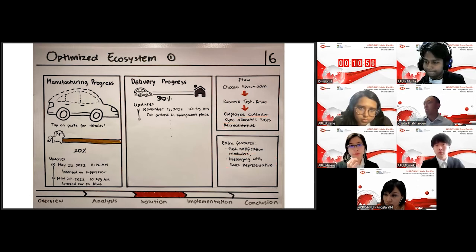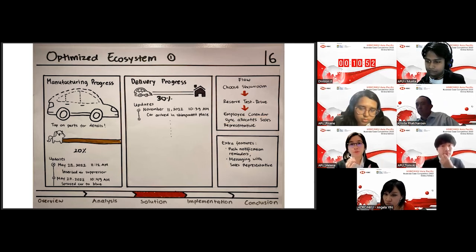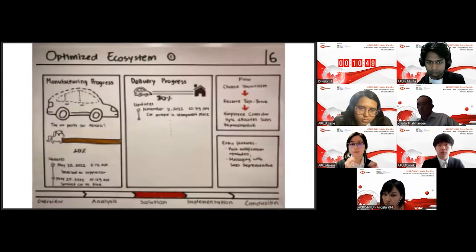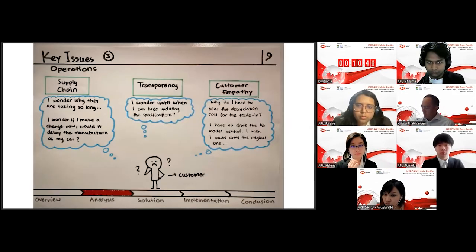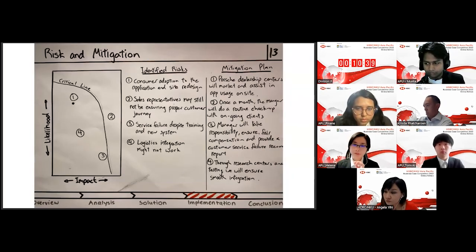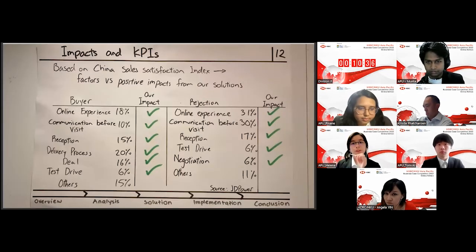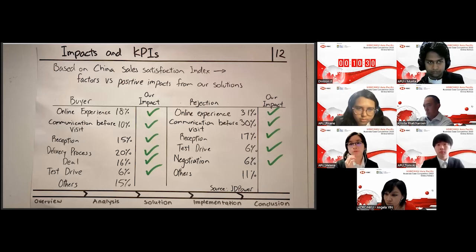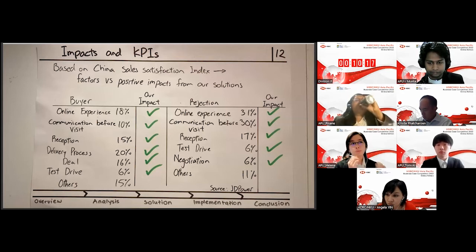I would like to add, so in the graph part, can you go to the graph part of there's acceptance and rejection? So, as you can see in the rejection part, online experiences factors 31%, which is a huge percentage. That is where we are trying to improve the online experience by, for example, having frequent updates to improve the customer understanding of the progress of the car and improve the overall online experience of the customer journey. Thank you for the question.